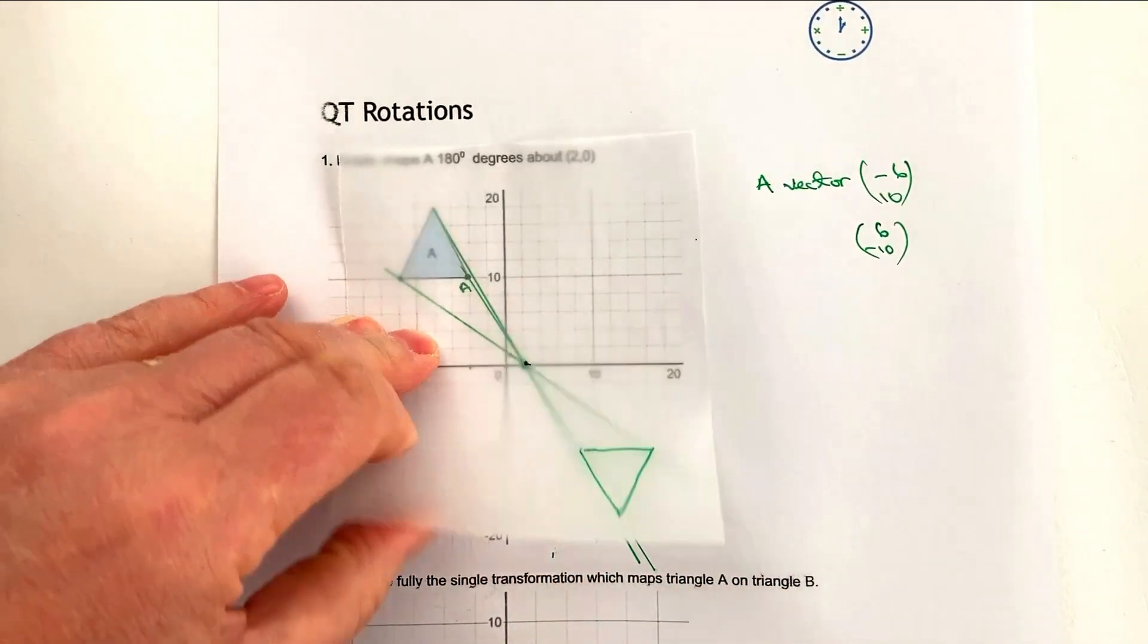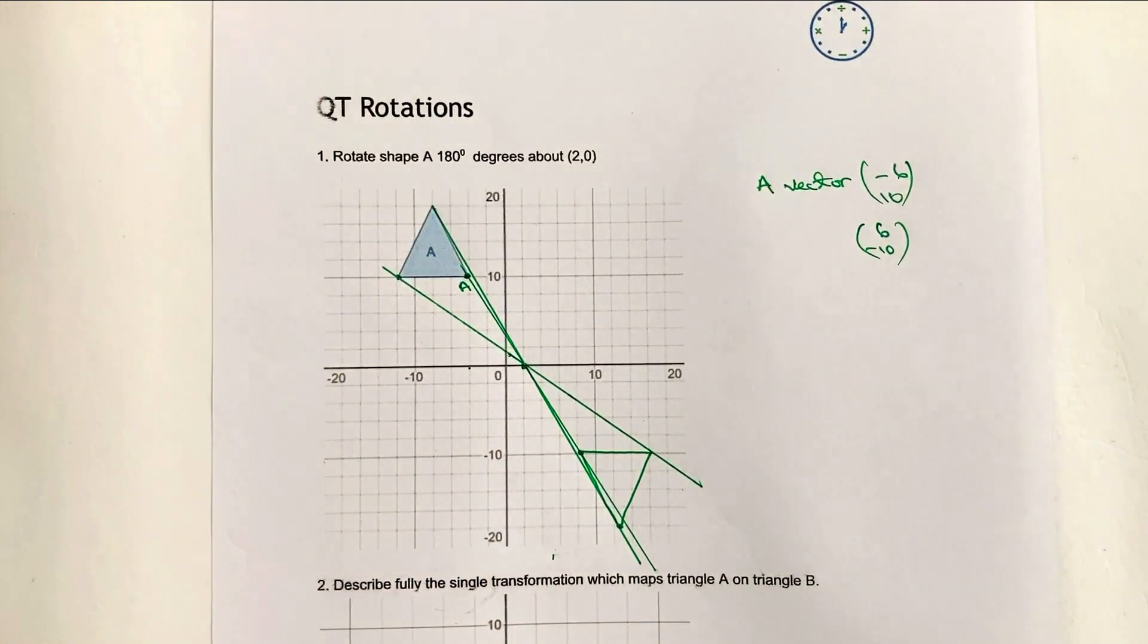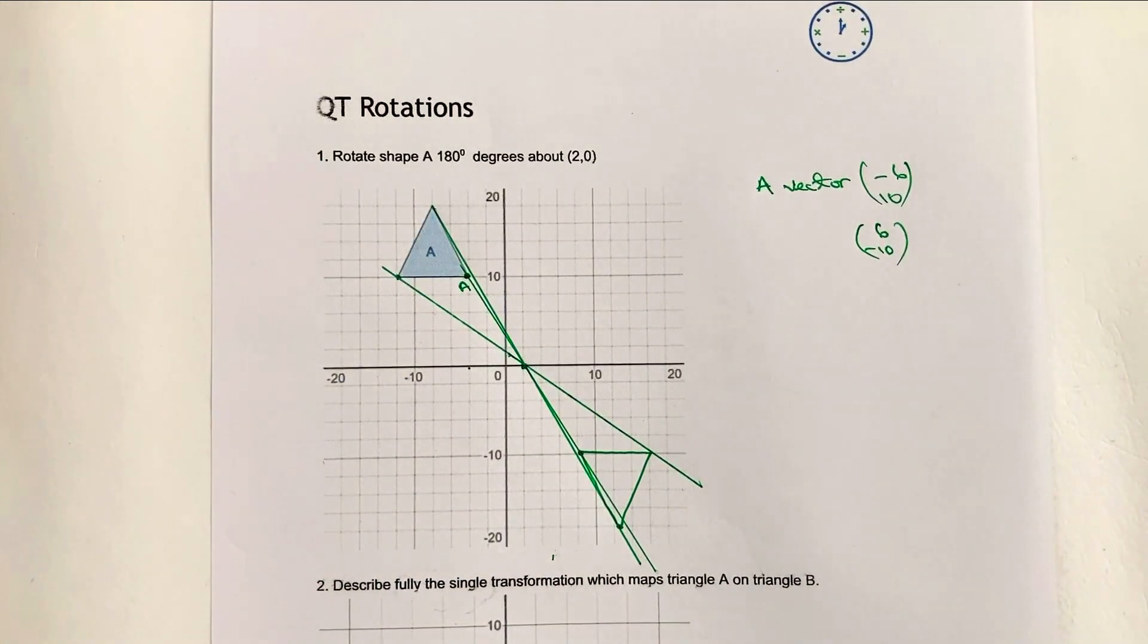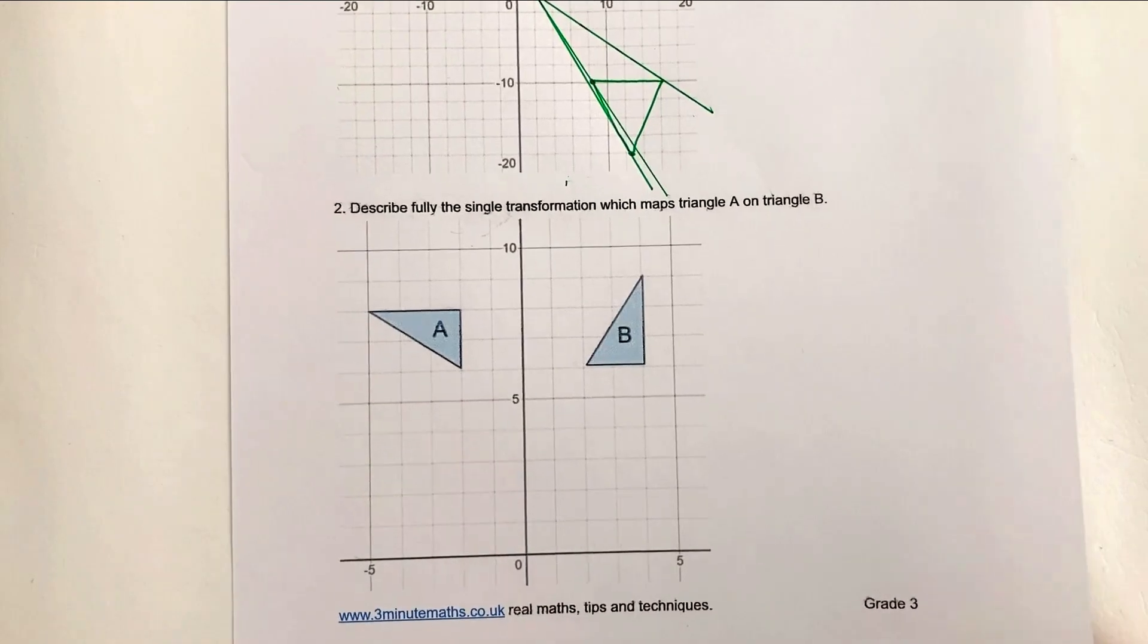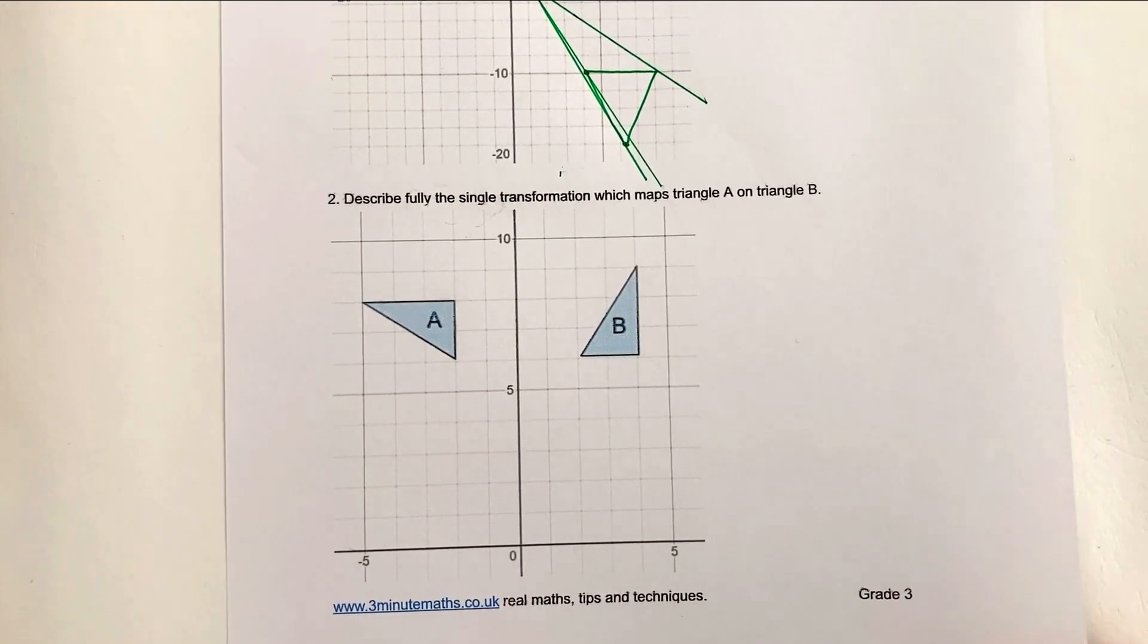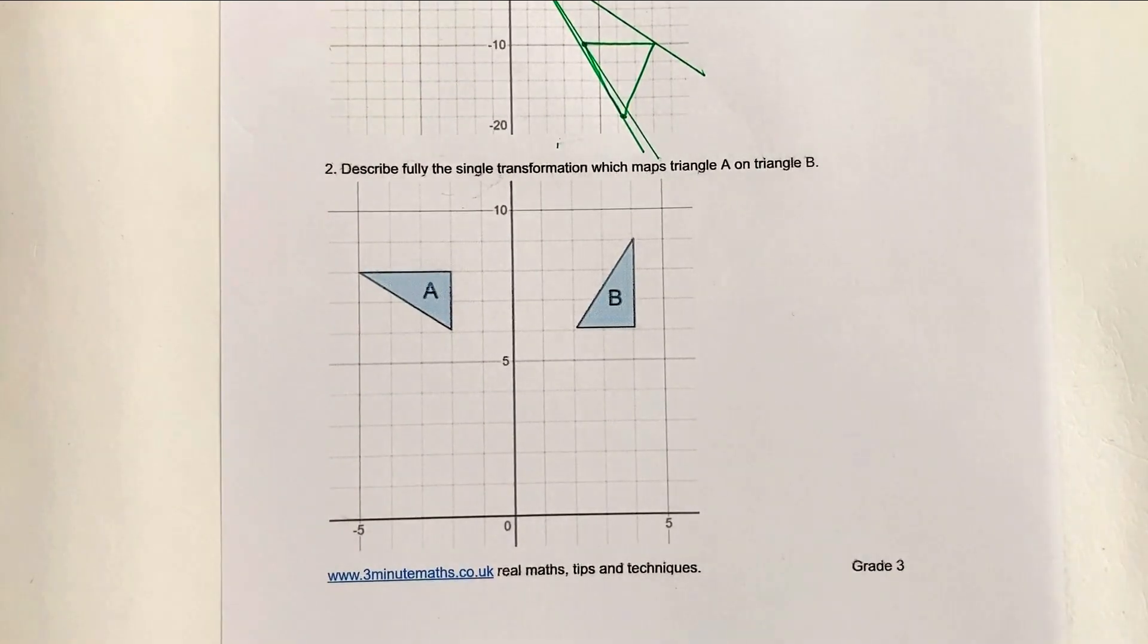All right, so hopefully you can see that what I've done is use that bit of tracing paper to be able to rotate the shape around. Let's have a go then with the next one. But actually in the next one, we're being asked to just describe fully the transformation. So we do use a bit of tracing paper in order to work that out because we need to know how far around it's rotated. Now, hopefully you can see it's a rotation.